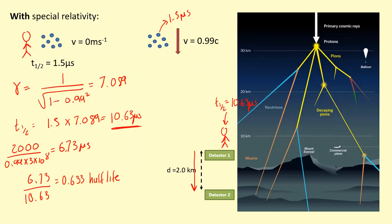So if I do 100 percent at the detector here, if I do 100 times by half to the power of 0.633, I get 64.5 percent. So it turns out a lot more arrive here than was predicted, because without special relativity we expected only approximately 4.5 percent to arrive. But as you can see, a lot more has arrived, and when the experiments were done, it turned out this was correct.